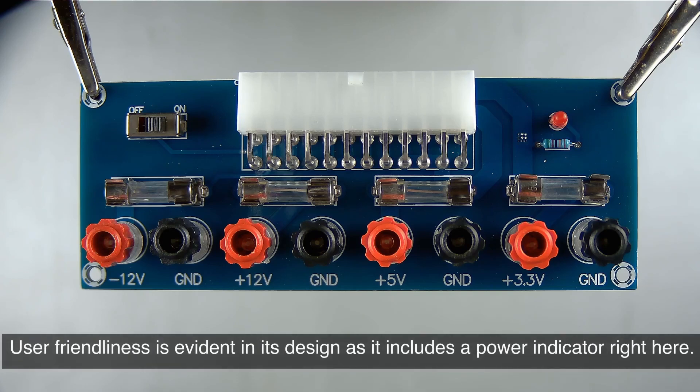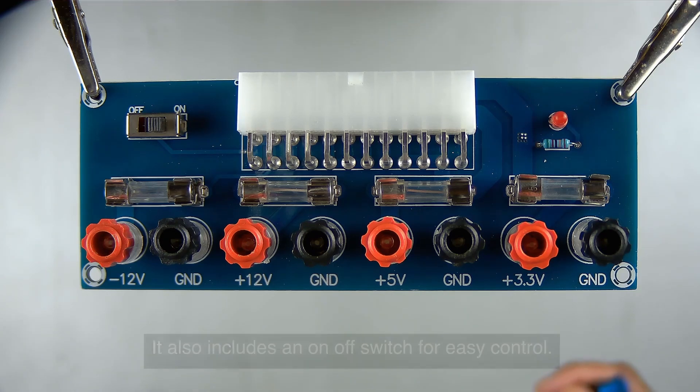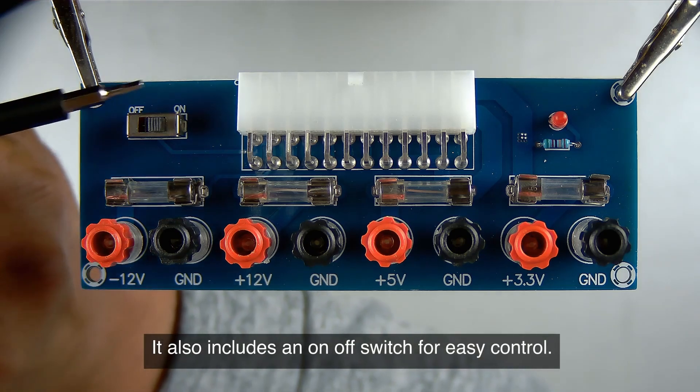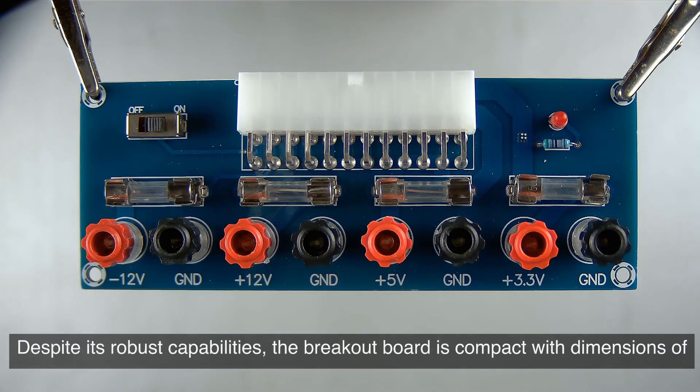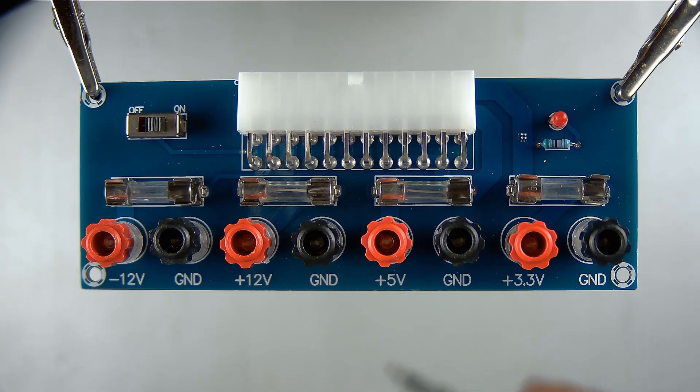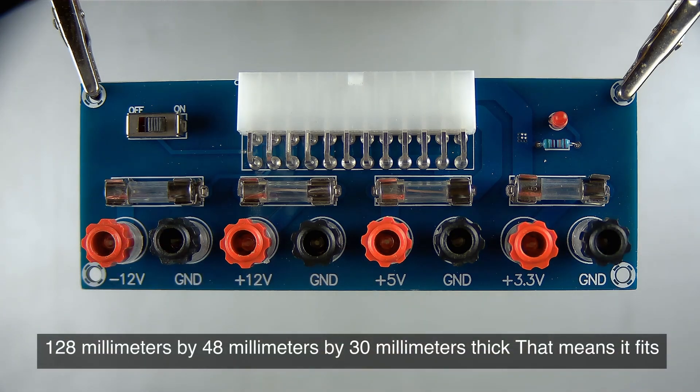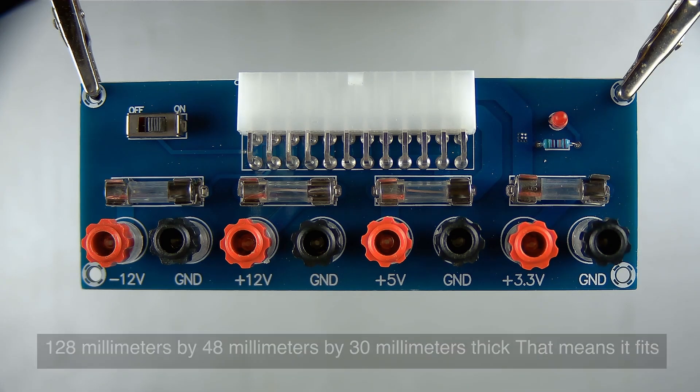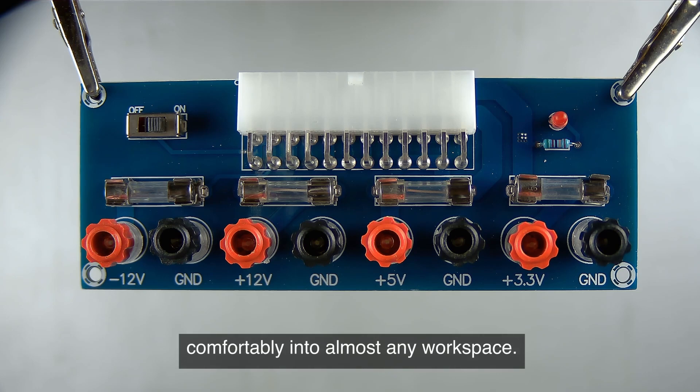User friendliness is evident in its design, as it includes a power indicator right here. It also includes an on-off switch for easy control. Despite its robust capabilities, the breakout board is compact with dimensions of 128 millimeters by 48 millimeters by 30 millimeters thick. That means it fits comfortably into almost any workspace, and it also includes a mounting hole at each corner so you can securely attach it.